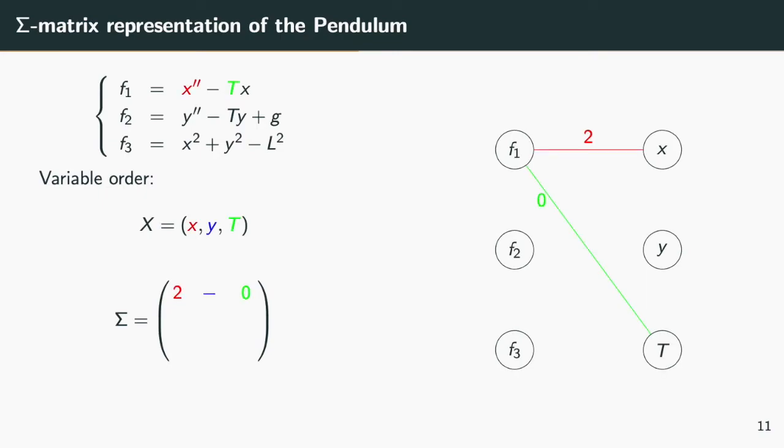For equation f1, variable x appears with a differentiation order of 2. This gives us both the entry in the sigma matrix and the weight of the edge in the graph. The same holds for variable t with a weight of 0. Variable y does not appear in f1, the entry in the sigma matrix is set to minus infinity, denoted here by a dash, and there is no edge between f1 and y in the graph. By doing so for every equation, one gets the structural representation of a DAE system.